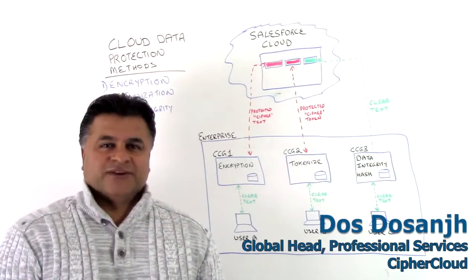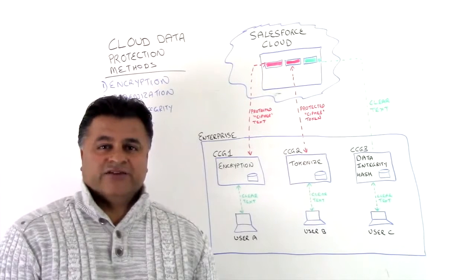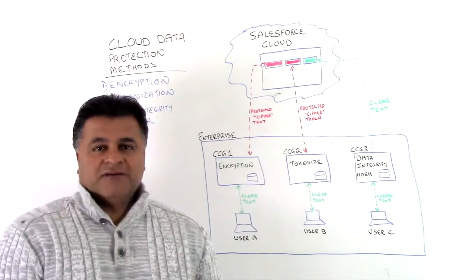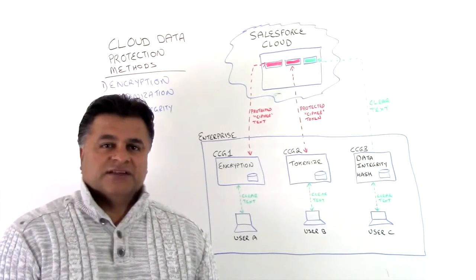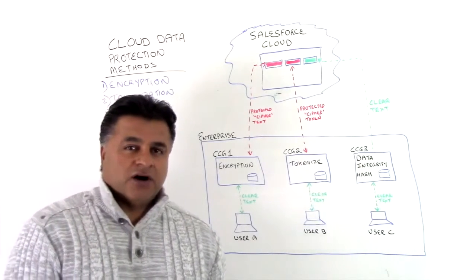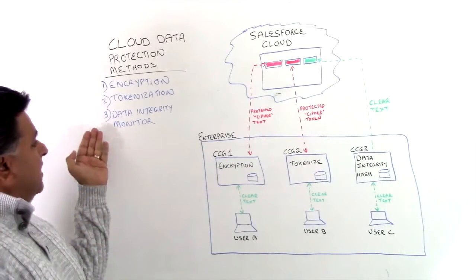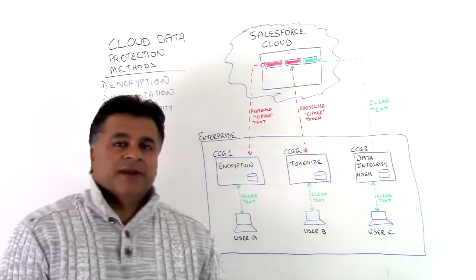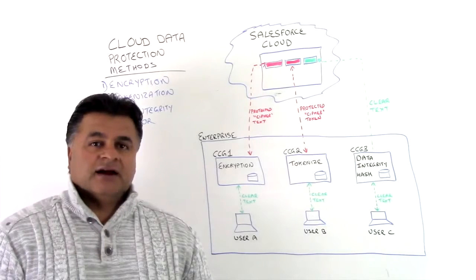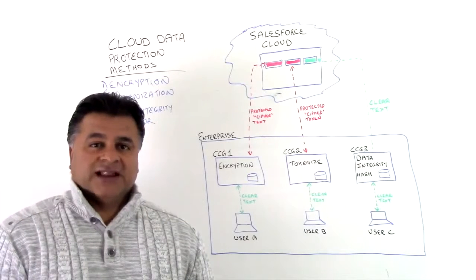Hello, this is Dostosanj with Cypher Cloud Professional Services, and I'm delighted to bring you another session of our Friday Chalk Talk. Today we're going to be focusing on three of our data protection methods which we utilize for our customers around the globe. Those three protection methods are encryption, tokenization, and data integrity monitor. We use a combination of these to ensure that our clients meet their security requirements as they move their information into the cloud.